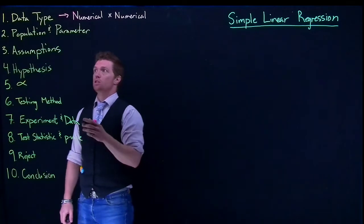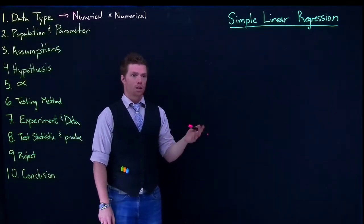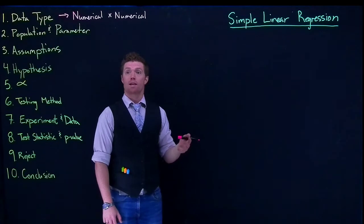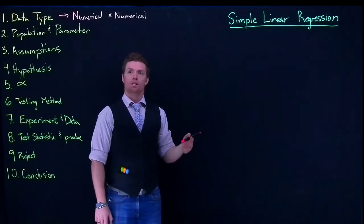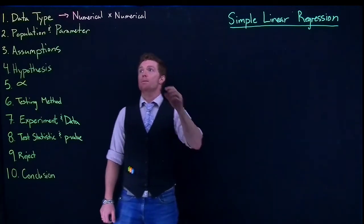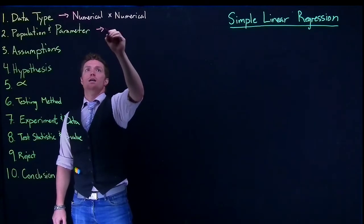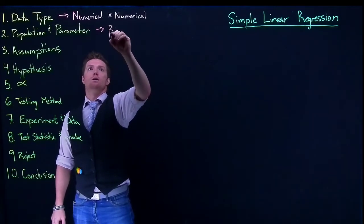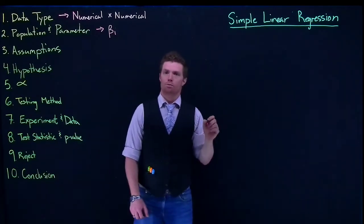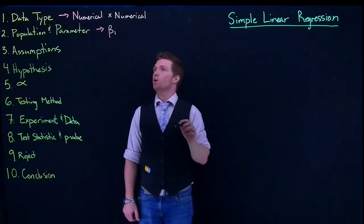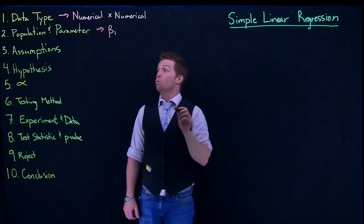So our population is still the subjects that we're measuring, wherever that sample came from. That's going to be our population that we're interested in. And the parameter that we are interested in is beta 1. That's the parameter that we're interested in, that's what we're going to go on and wind up estimating.